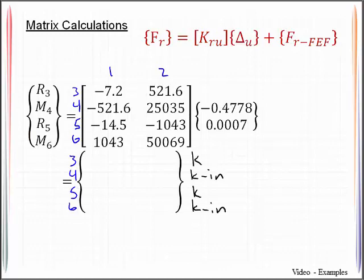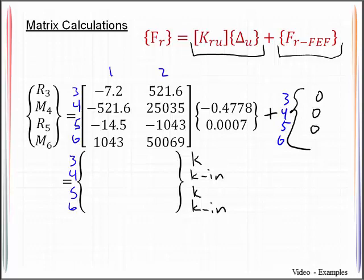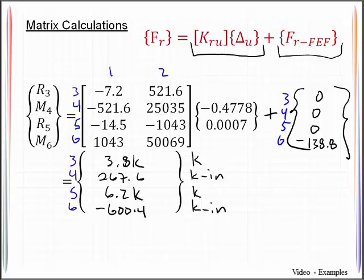We can jump directly from that into calculating the reactions by using this matrix operation, which is typical for the matrix approach. But we also are going to need to superimpose back the fixed-end forces that resulted from that thermal gradient. So we will have those here for the degrees of freedom 3 through 6. And those quantities are 0, 0, 0 and negative 138.8. Performing that matrix operation, I get 3.8 kips, 267.6 kip inches, 6.2 kips, and negative 600.4 kip inches.